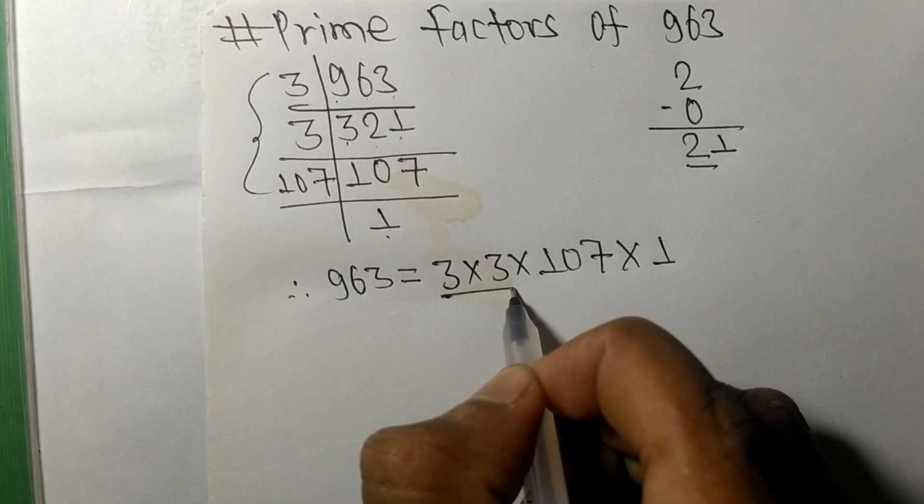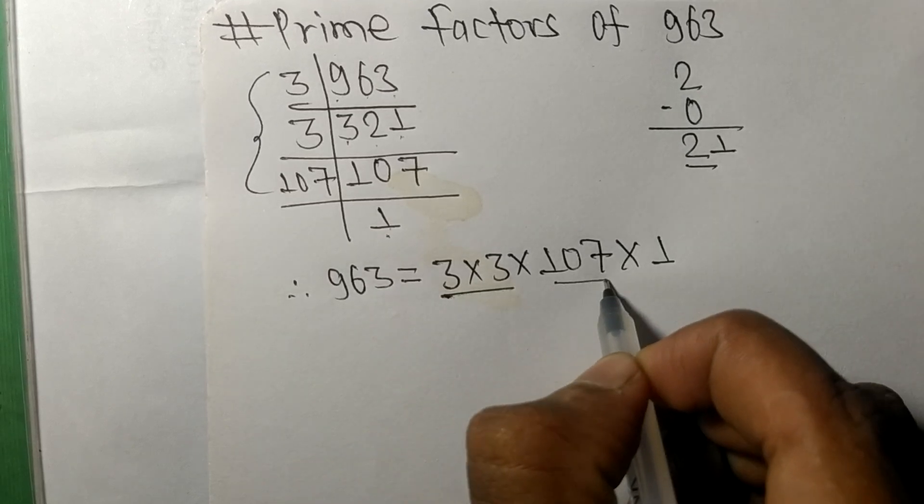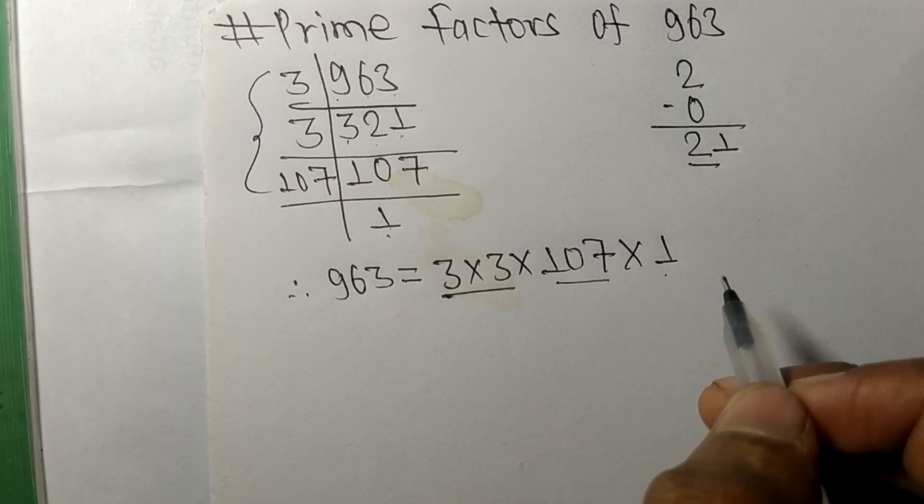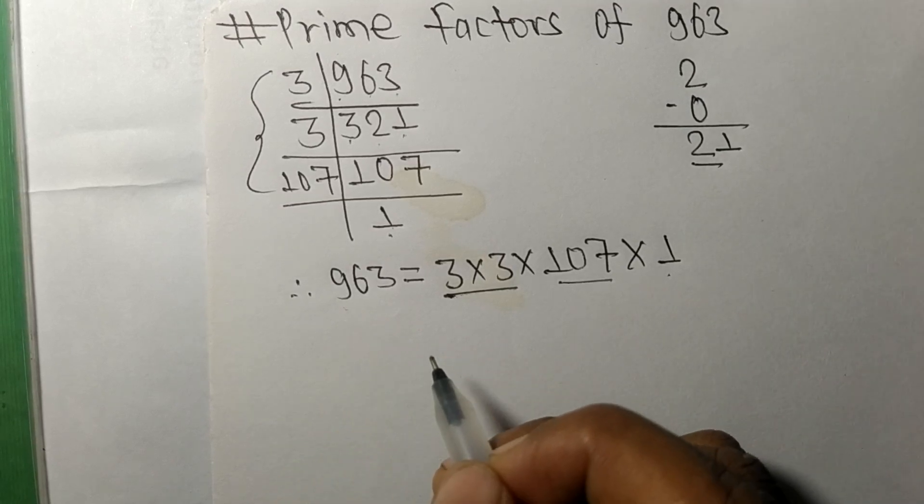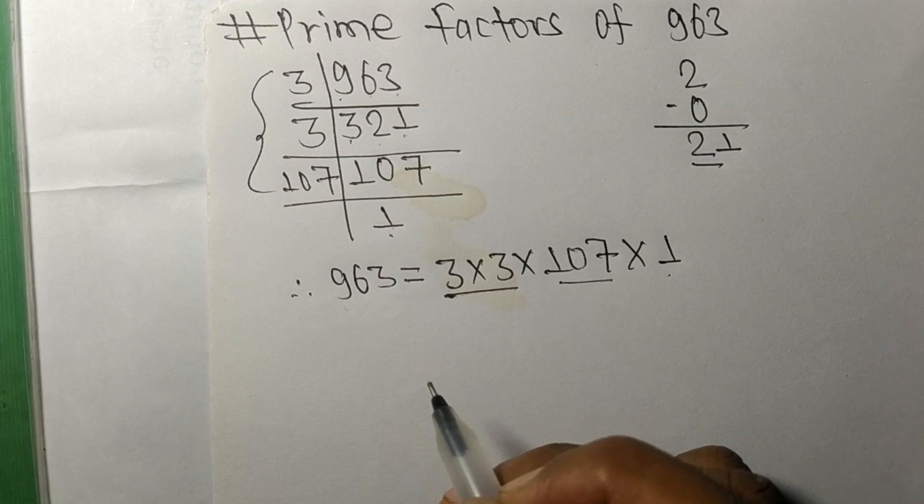So these 3, 107, and 1 are the prime factors of 963. So this much for today, and thanks for watching.